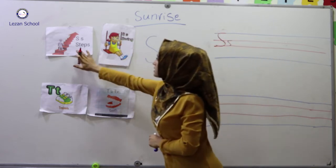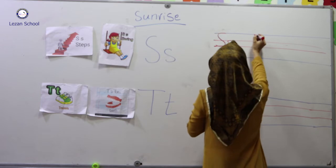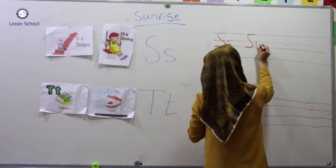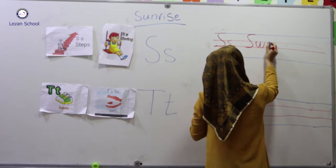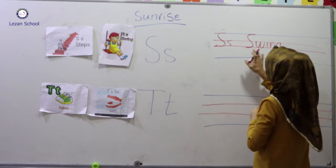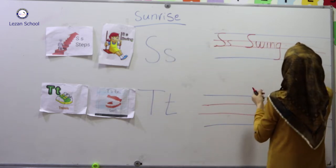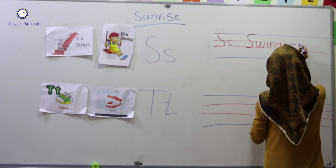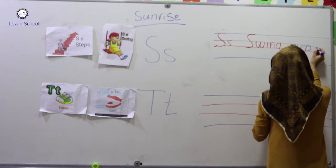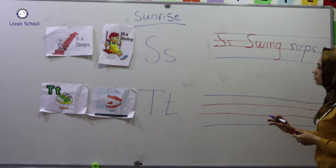C, swing. C, steps. How to write down these words on these lines? Look — swing. Also for capital C, we need three lines. Swing. C, swing. Another example: C, steps. This time we are writing down C small. C, C, steps. Look, for this small C, we need only these two lines.